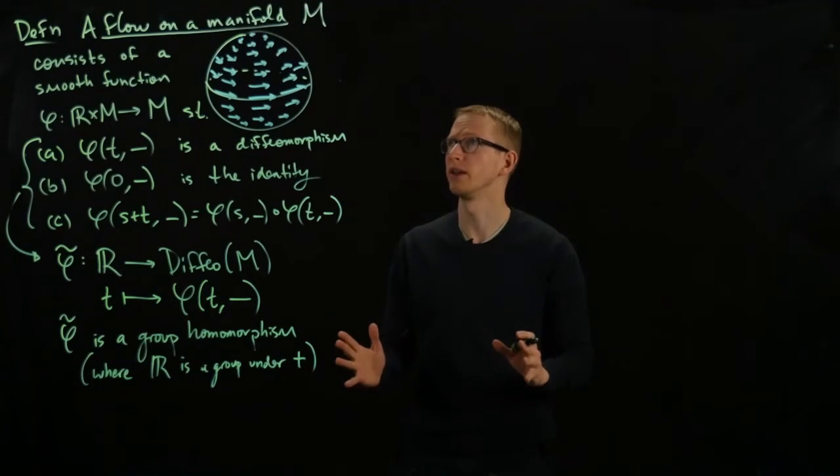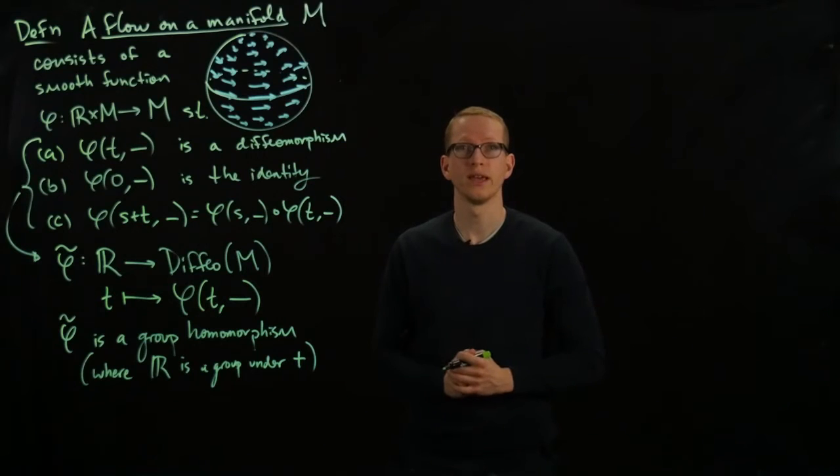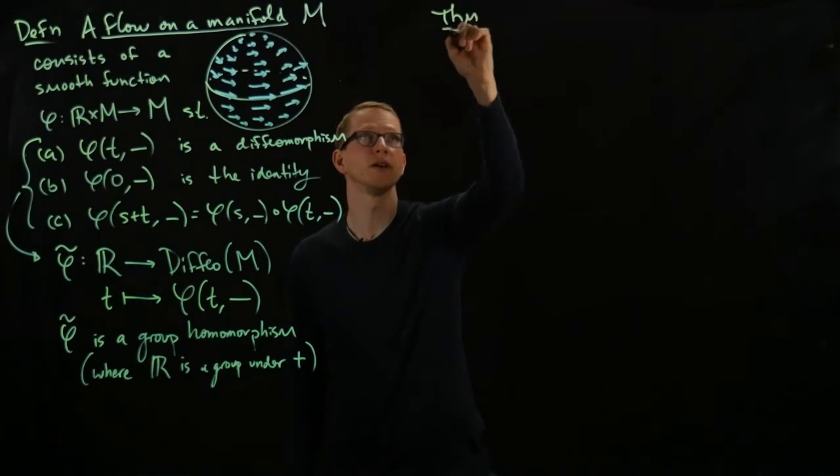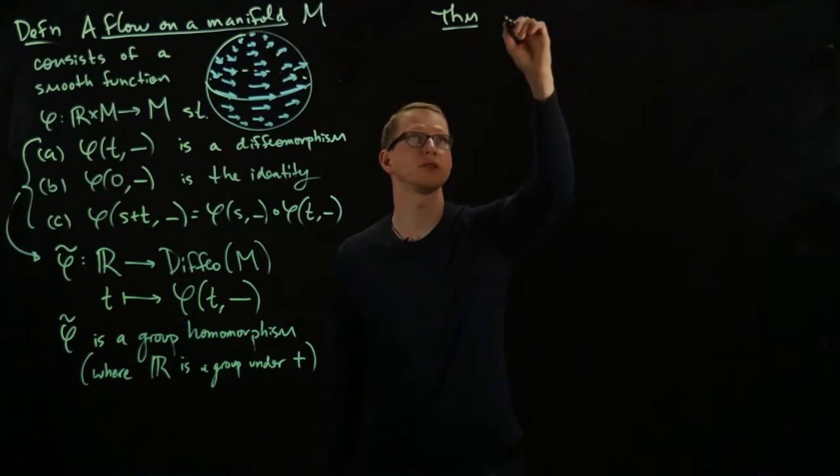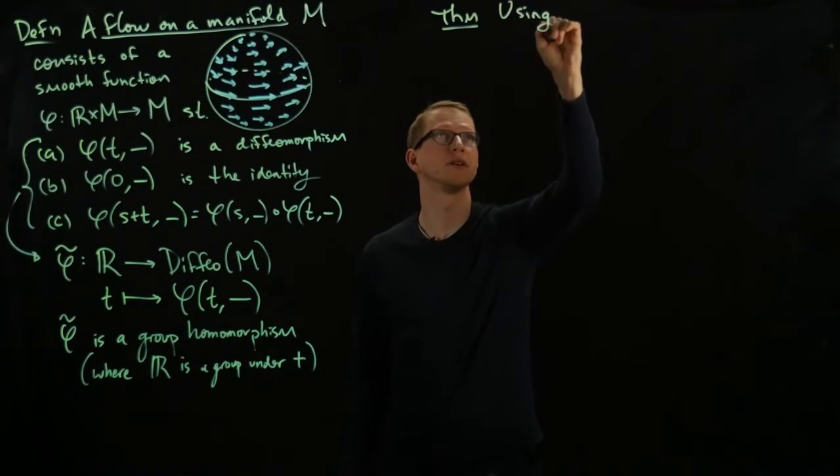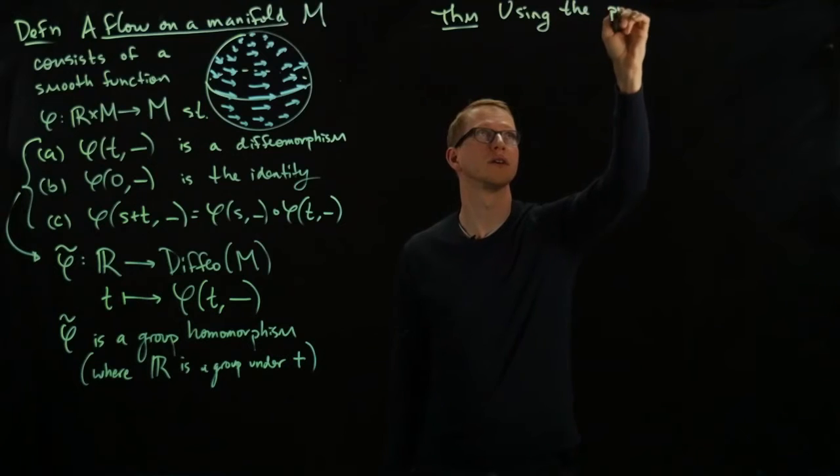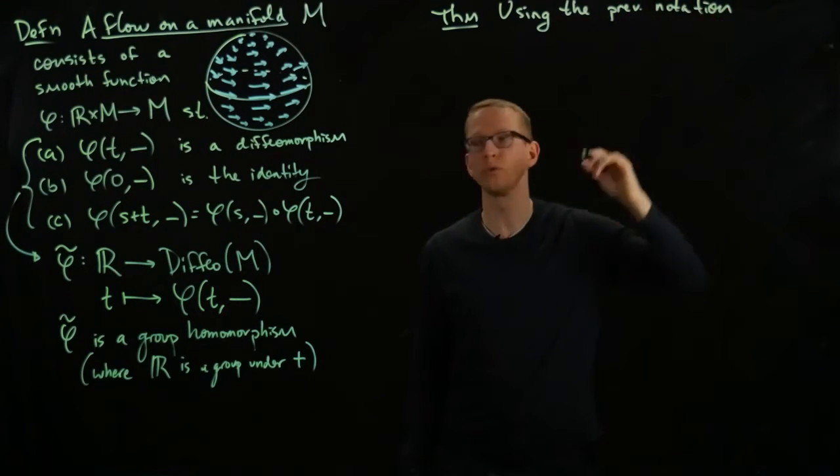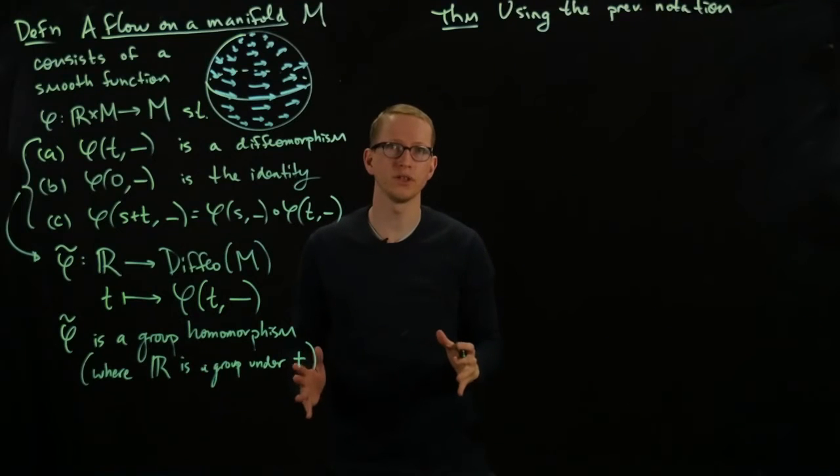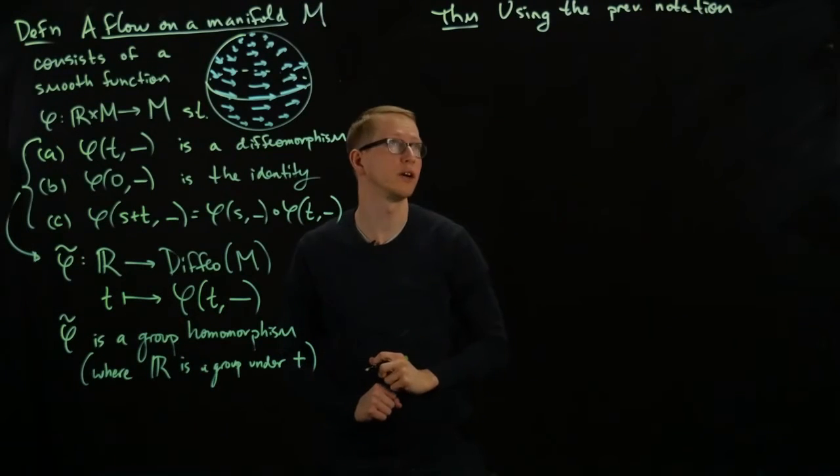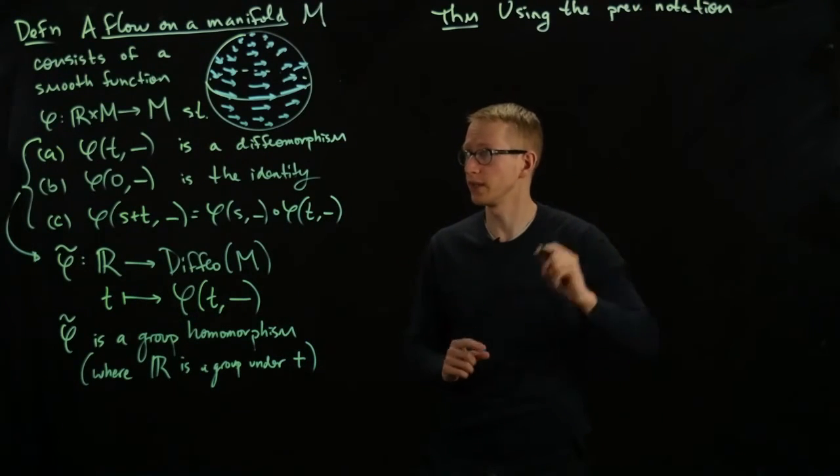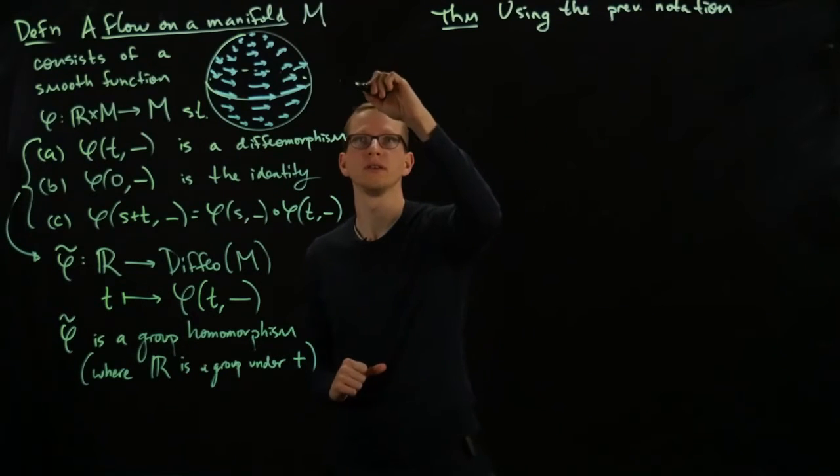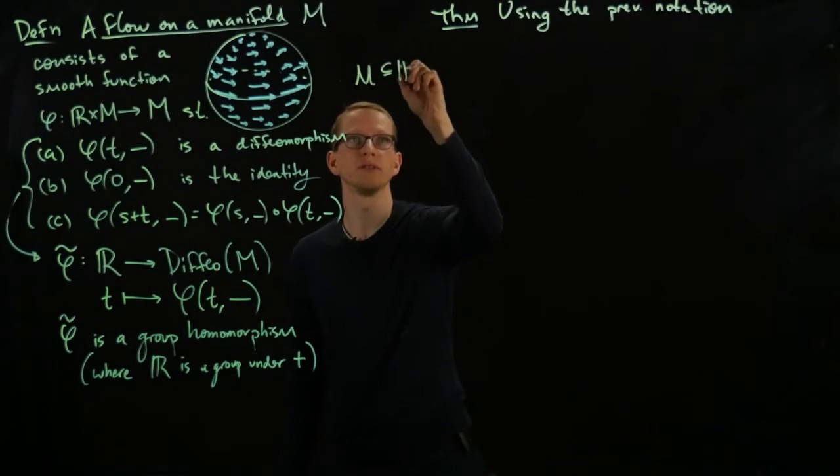And there's something very important about flows on manifolds and that they give rise to vector fields. We have a theorem and the theorem says using the notation from above we can actually define a vector field on a manifold given any such flow. And let's assume for this statement that M is a subset of R^K.